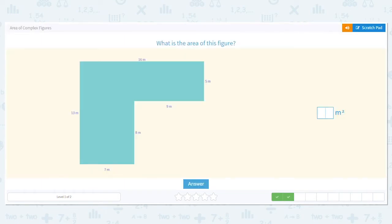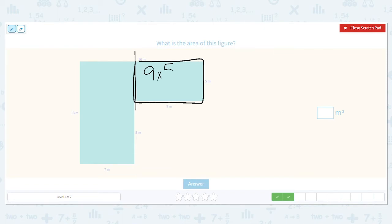Alright, next one. How do I want to split this one? I can split it two different ways, and I'm thinking I am going to split it like this. So this rectangle here is 9 times 5, which equals 45. And then I have to do the large rectangle here, which is 13 by 7, so 13 times 7.